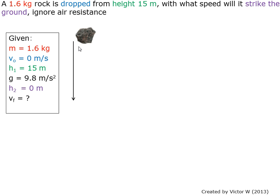The first step is to summarize the information given. The mass of the rock is 1.6 kilograms. Initial speed is 0 meters per second since the rock is dropped and not thrown. Initial height is 15 meters.